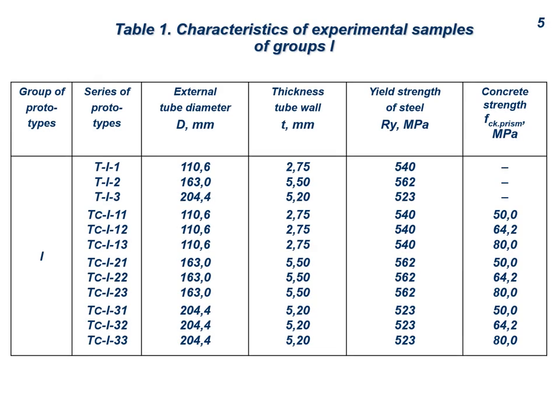The next slide shows the characteristics of the samples. In particular, the diameters of pipes and the thickness of their walls, the yield strength of steel, and the strength of concrete.